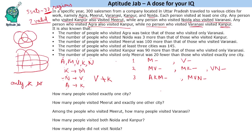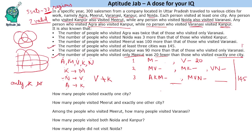Now we use the given conditions to fill in the values. The number of people who visited only Meerut was twenty fewer than those who visited exactly one city. So if exactly one city is x, then only Meerut is x minus 20, meaning only Varanasi is 20. The number of people who visited Kanpur was ninety more than those who visited only Varanasi — so Kanpur is 110.